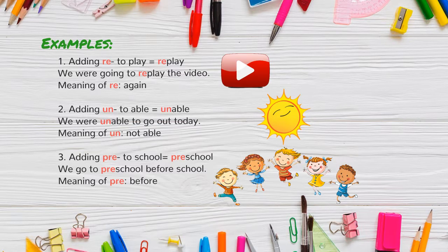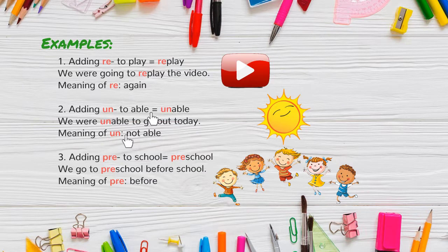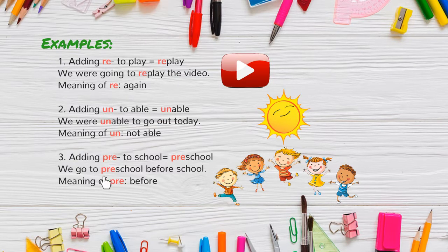Number two, if we take the prefix un, which means not able, and add it to the root word able, it now becomes unable, which means not able to do something. And number three, if we take the prefix pre, which means before, and add it to the root word school, it becomes preschool. You go to preschool before you go to school.